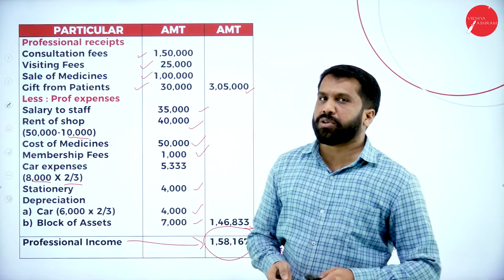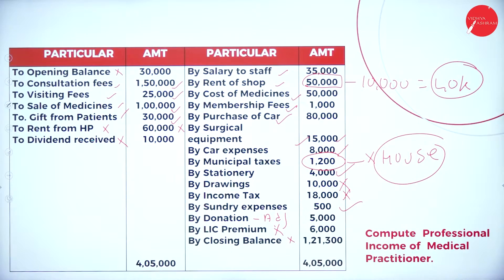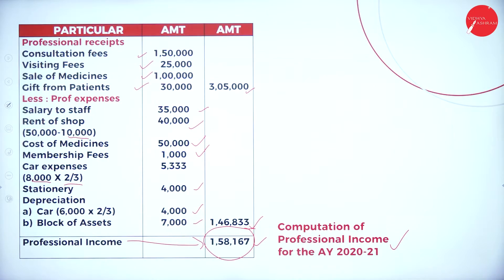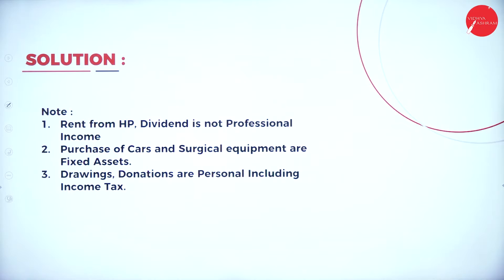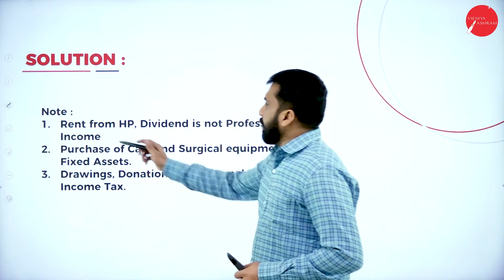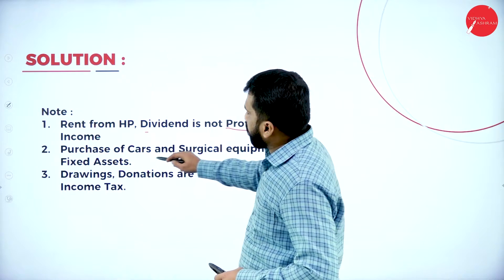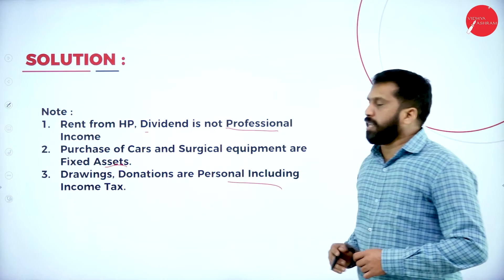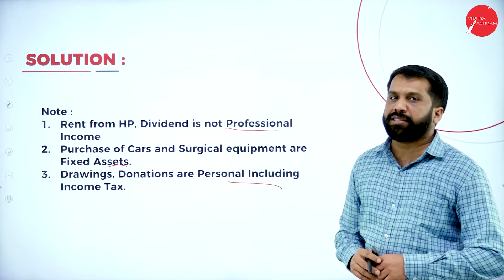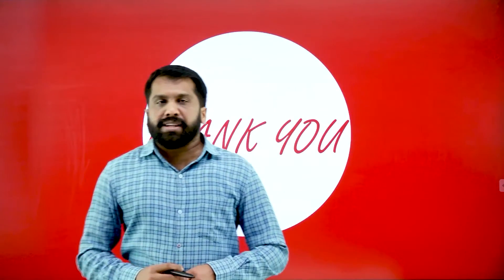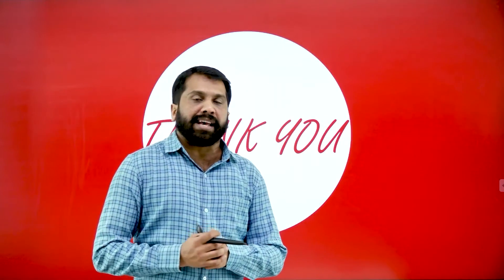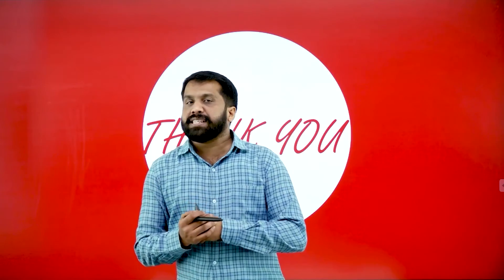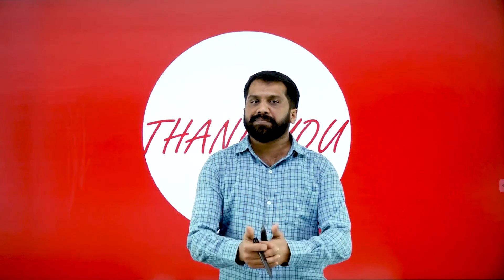You can take a screenshot of the question, the adjustments, and the solution. Notes to remember: rent from house property and dividend are not professional income; purchase of car, surgical equipment, or any fixed asset — only depreciation is considered; drawings, donation for personal causes, and income tax are personal expenses. These notes are compulsory in income tax. This concludes today's session on the calculation of doctor profession — the easiest topic, where you can easily score 10 marks.